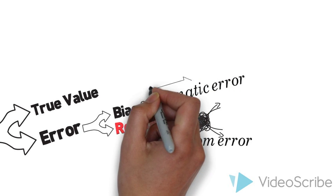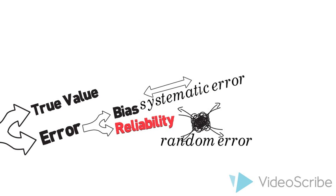Bias, which we'll discuss in a later video, is a description of systematic error in the answers to survey questions.